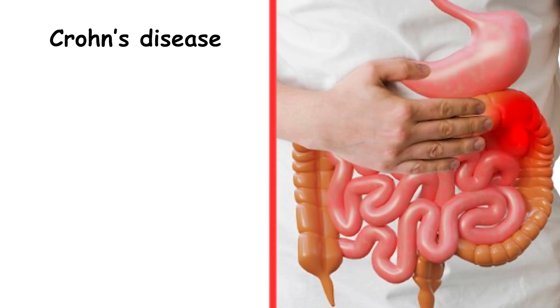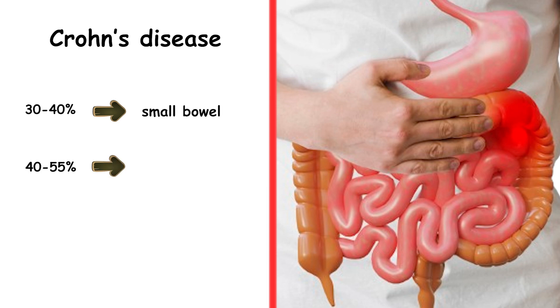Crohn's disease can affect any part of the gastrointestinal tract from the mouth to the anus. 30-40% of patients have small bowel disease alone, 40-55% have disease involving both the small and large intestines, and 15-25% have colitis alone. Unlike ulcerative colitis, Crohn's disease is a transmural process.